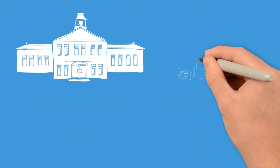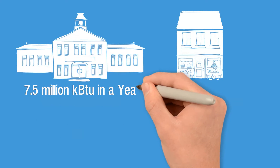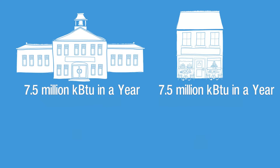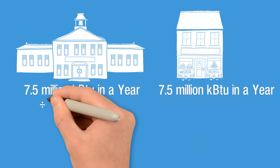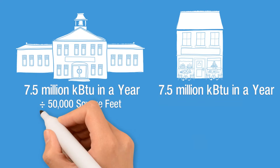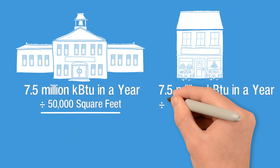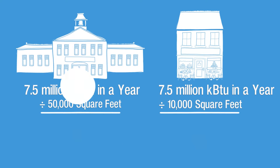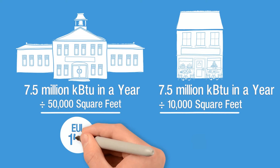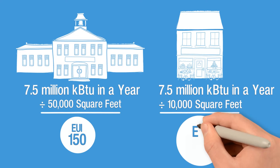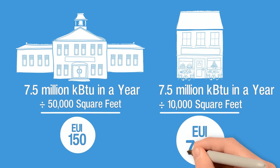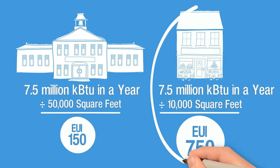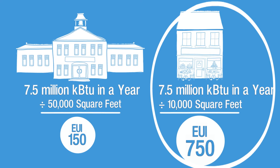Say both a school and a restaurant use 7.5 million KBTU in a year, but the school is 50,000 square feet while the restaurant is only 10,000 square feet. The school's EUI would be 150, while the restaurant's EUI would be 750. They consume the same amount of energy, but the five-times-smaller restaurant is far more energy intensive.